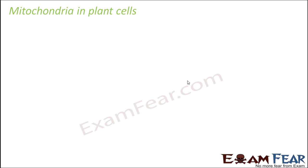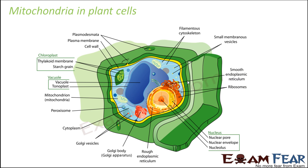Now let us look at mitochondria in plant cells. Here again you can see the mitochondria. The structure of mitochondria is similar in both plant cells and animal cells — obviously, because whether it is a plant or an animal, they need mitochondria since they need energy.